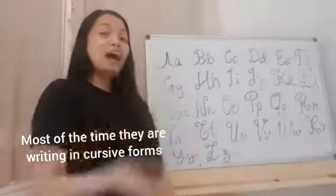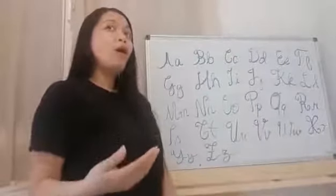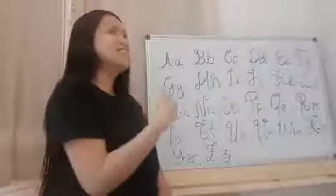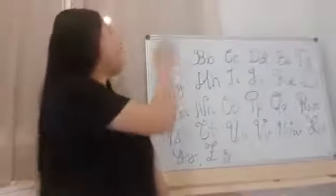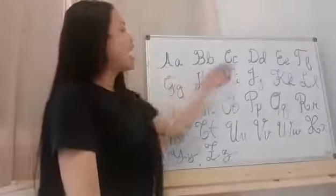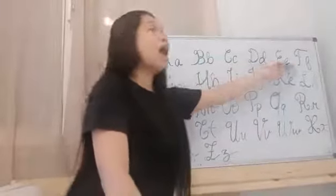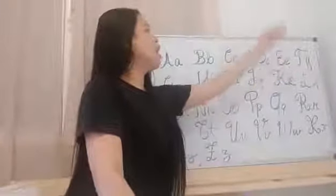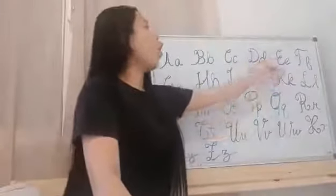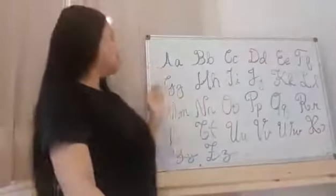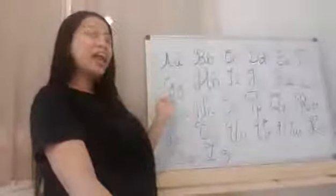L'alphabet en français: A, B, C, D, E... no, E... not U, E, correct. F, G, H, I, G... no, J, J, J, K, L, M, N, O, P, Q, R, S, T.